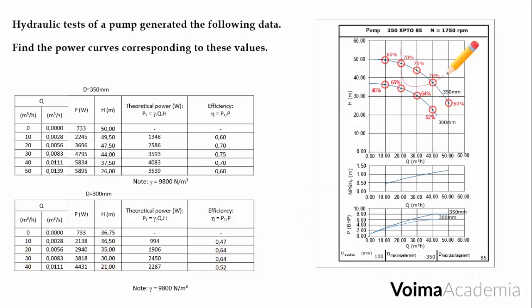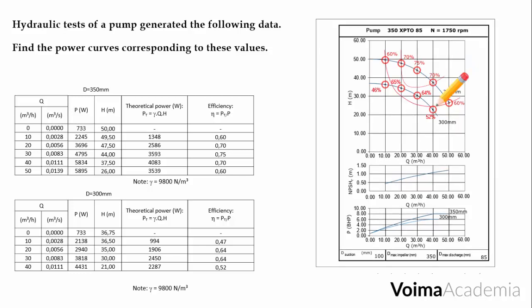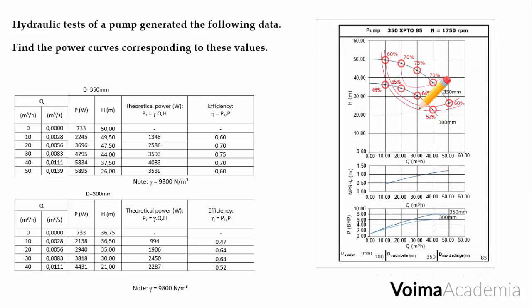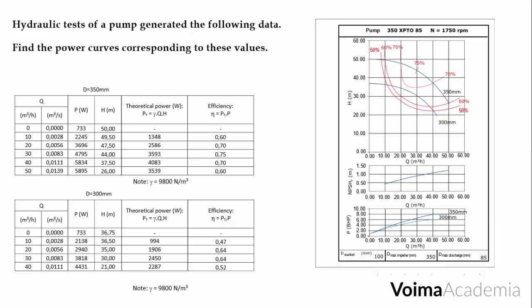Now we just trace the isoefficiency curve. It requires some practice. But here is the first one for 70%. Another one for 60%. And this one for 50%. And here are the curves that we wanted.